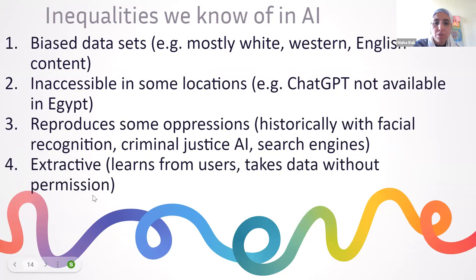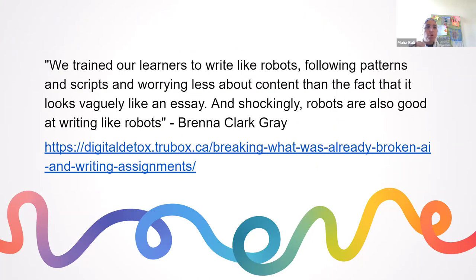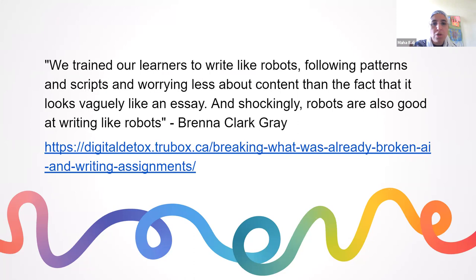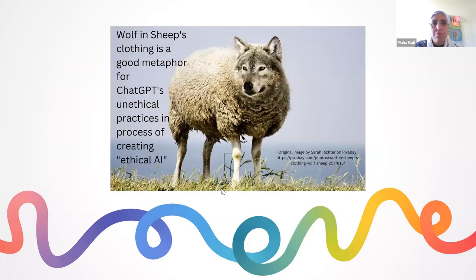AI is extractive — they give it to us for free and then take our data and learn how we use it. When you think about ChatGPT 3.5 versus version 4, they don't write the best text ever, but they write like students write. Brenna Clark Gray tells us we trained our learners to write like robots — following patterns and scripts, worrying less about content — and so shockingly, robots are also good at writing like robots.